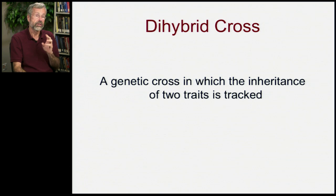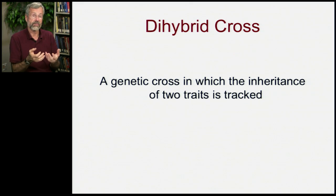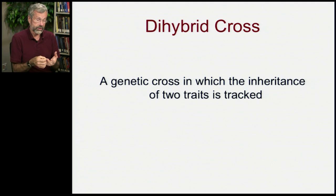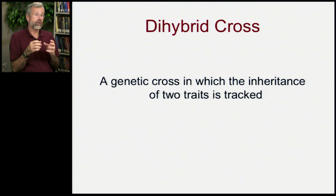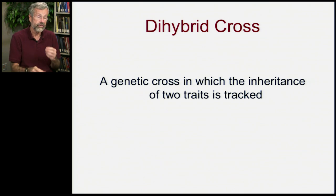To do this, we're going to take specific examples — breeding experiments as it were — and this will be called a dihybrid cross. This is a genetic cross in which we'll be tracking the inheritance of two separate traits.